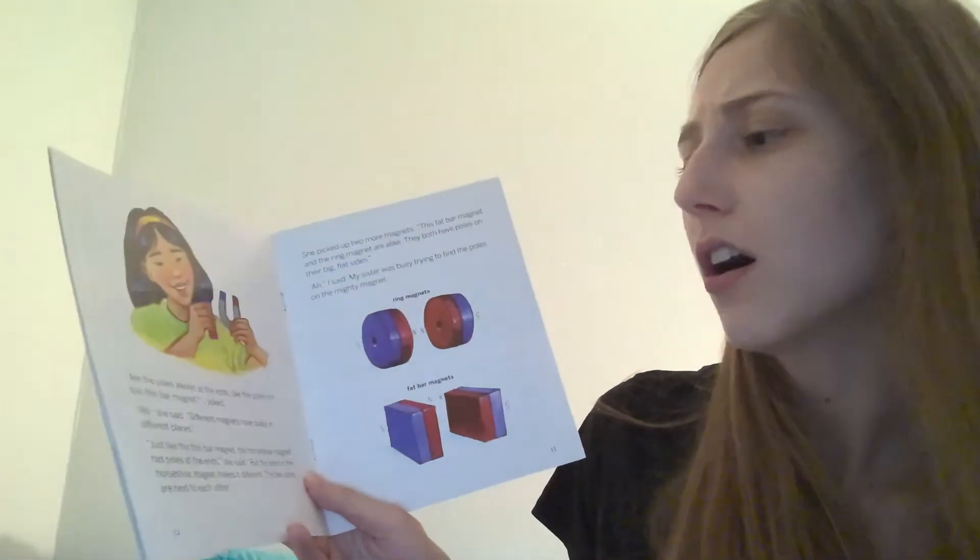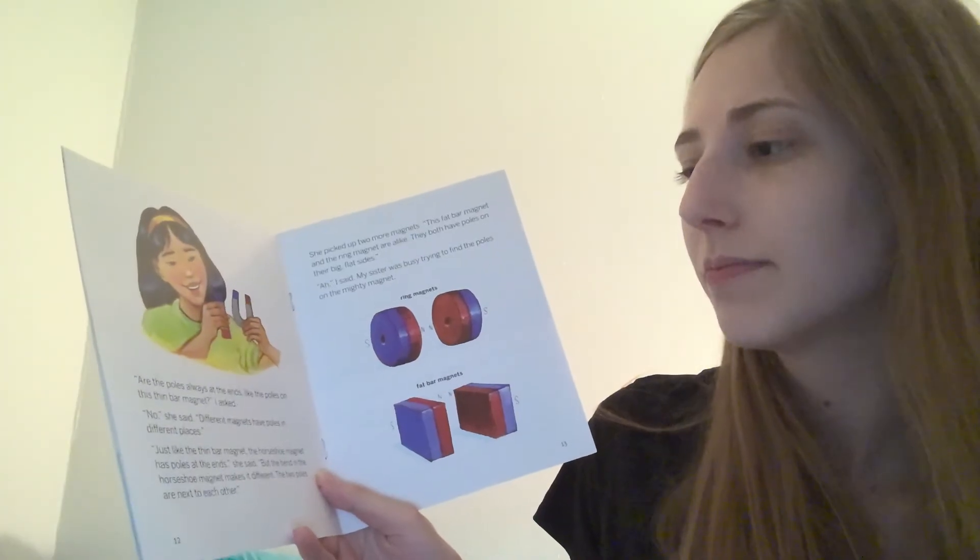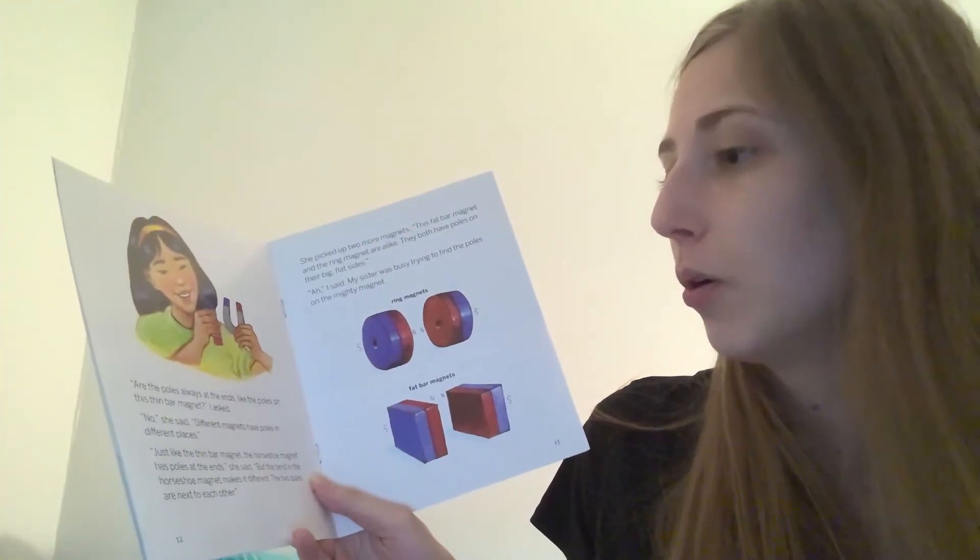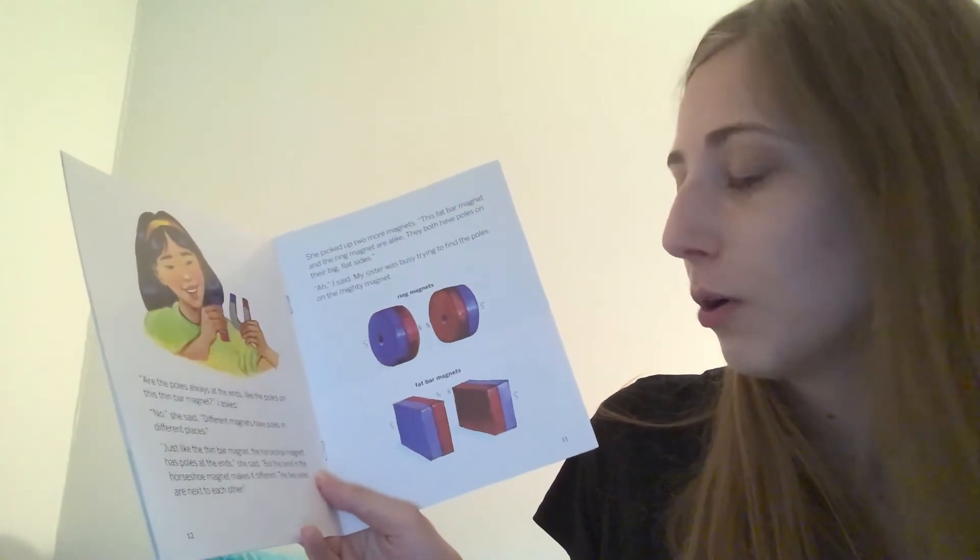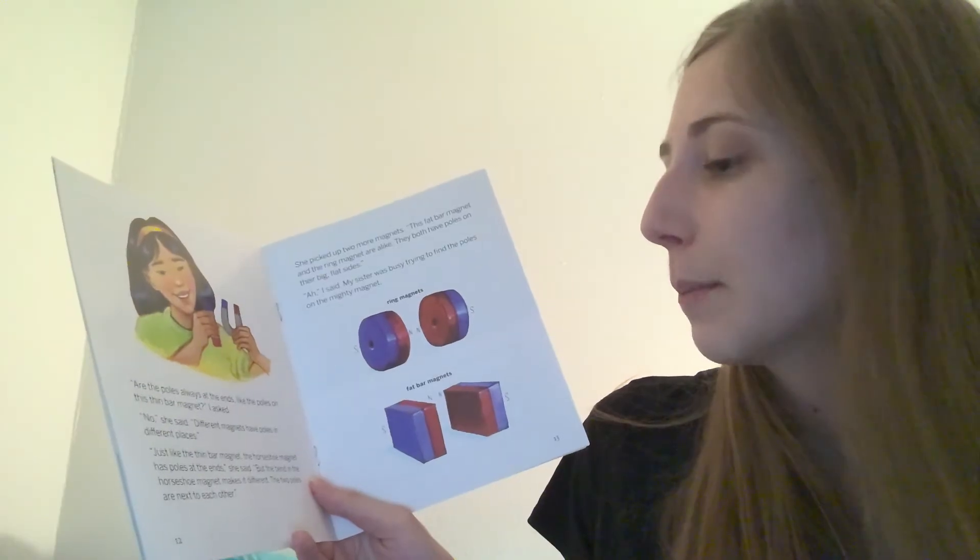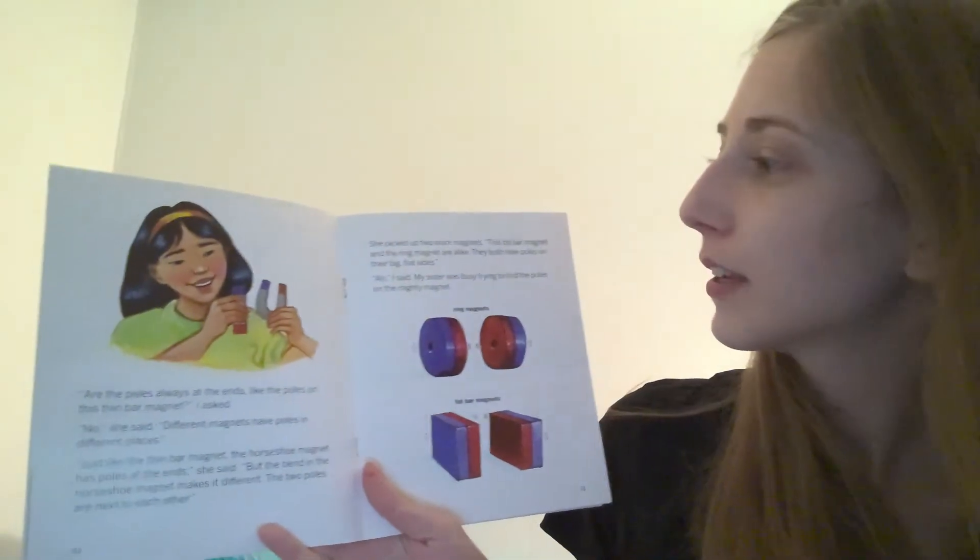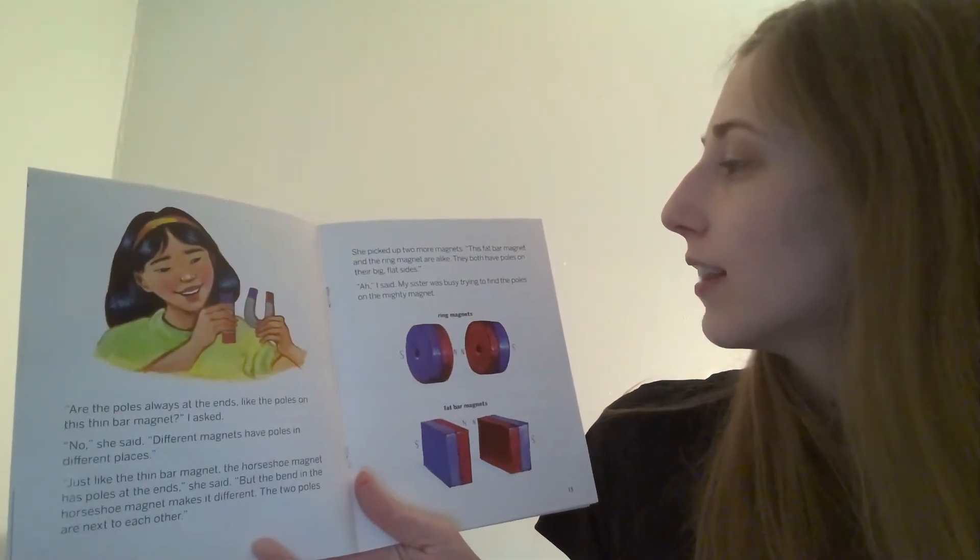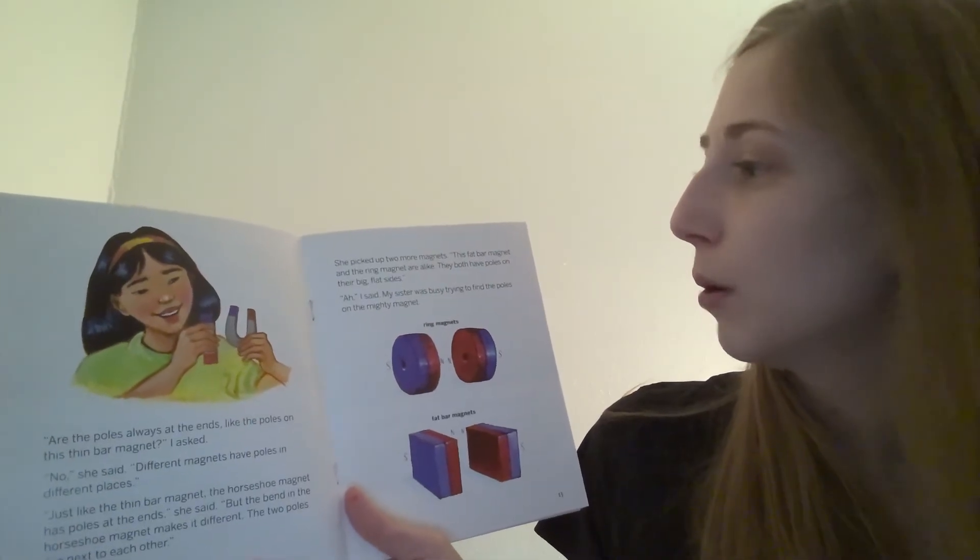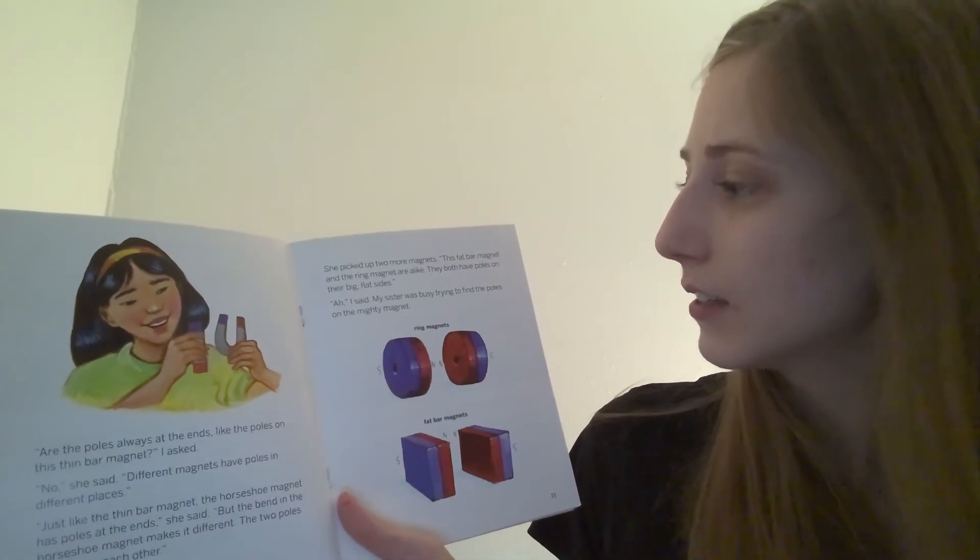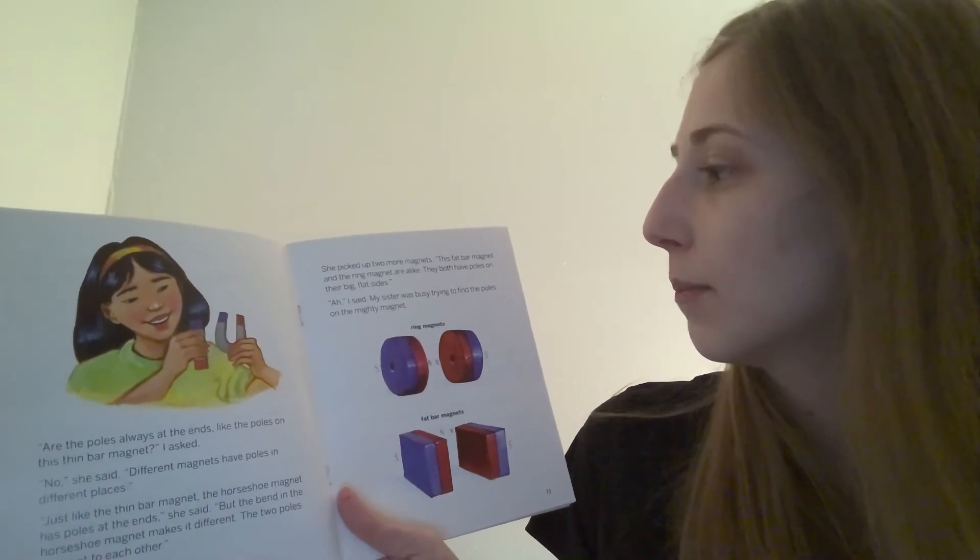Are the poles always at the ends? Like the poles on this thin bar magnet, I asked. No, she said. Different magnets have poles in different places. Just like the thin bar magnet, the horseshoe magnet has poles at the ends, she said. But the bend in the horseshoe magnet makes it different. The two poles are next to each other. She picked up two more magnets. This fat bar magnet and the ring magnet are alike. They both have poles on their big flat sides. Ah, I said. My sister was busy trying to find the poles on the mighty magnet.